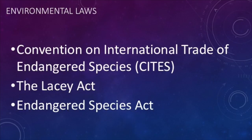Third, we have the Endangered Species Act — the strongest of the three. It provides a program for the conservation of threatened and endangered plants and animals and the habitats in which they live, with exceptions for scientific purposes or for the betterment of the species. Weaknesses include funding and the fact that it limits private landowners if an endangered species is found on their property. Overall, we have tried to preserve biodiversity, but as a globe we don't seem to have the right solution yet.